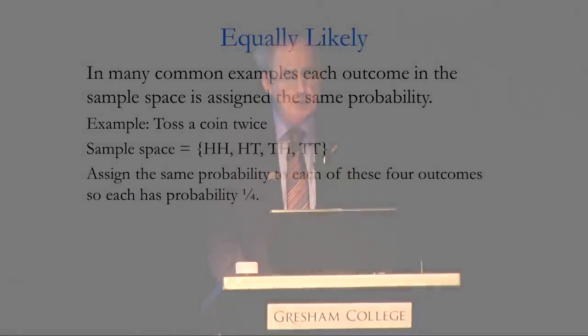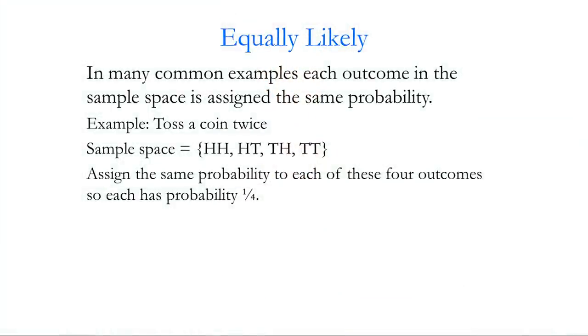What we want to do is put a probability onto the sample space. I'm going to deal with finite sets and the equally likely situation, where I assign the same number to each member of the sample space. For example, for the experiment of tossing a coin twice, the sample space is {HH, HT, TH, TT}. I'm going to associate the same number to each of them. By convention, probabilities add up to one, so if there are four equally likely outcomes, each has probability a quarter.